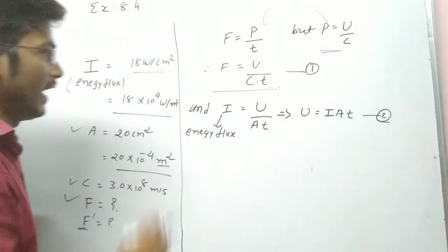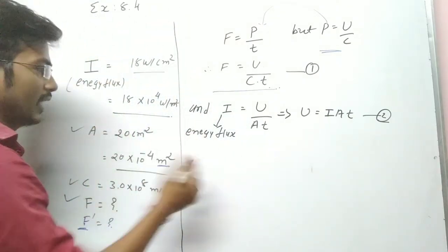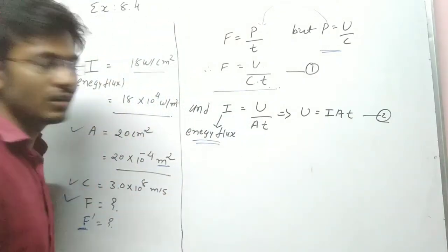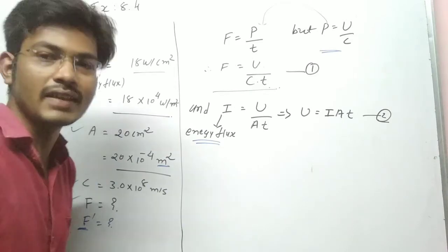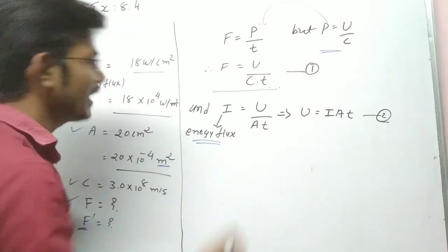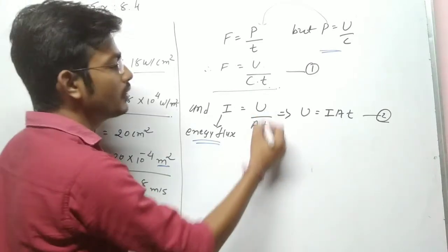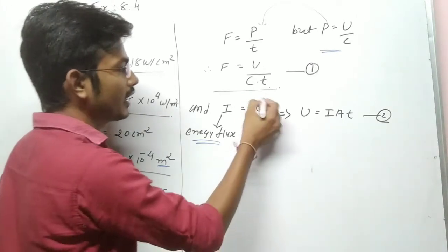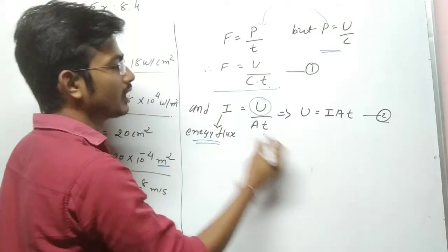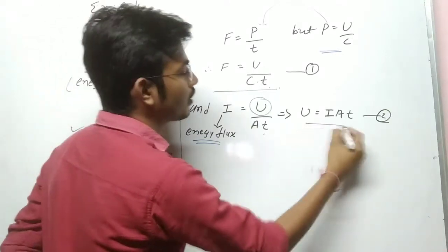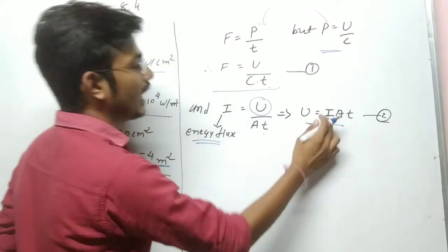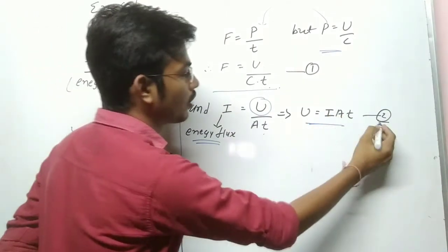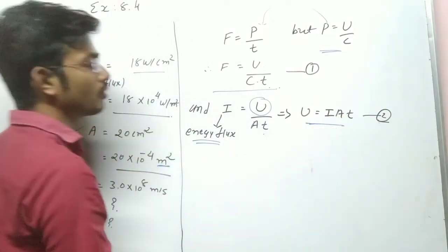We also know that intensity I — that means energy flux — is equal to U / (A × T). So we can write U = I × A × T. This becomes our Equation 2.